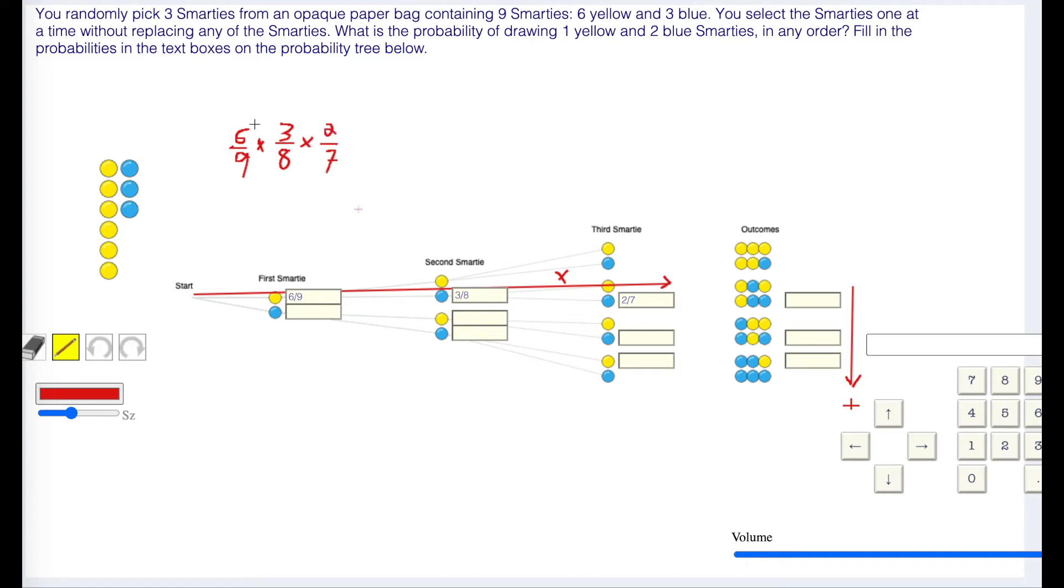Three goes into six twice. Three goes into nine three times. Three goes into three once, three goes into three once. Two goes into two once. Two goes into eight four times. Two goes into two once. Two goes into four twice.